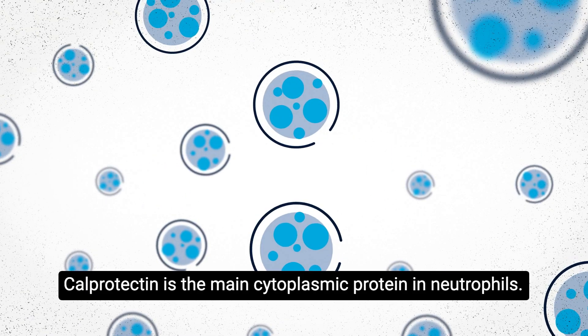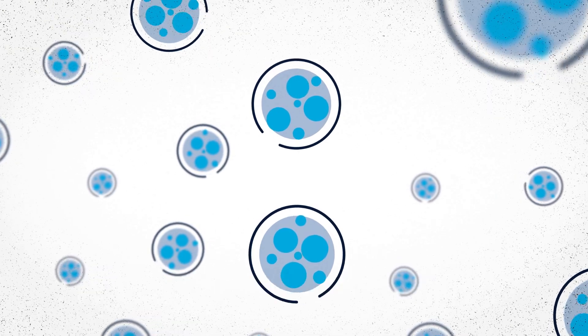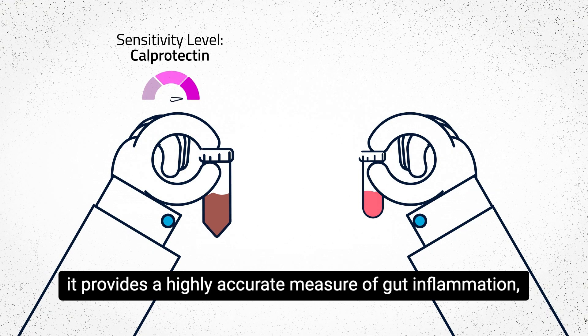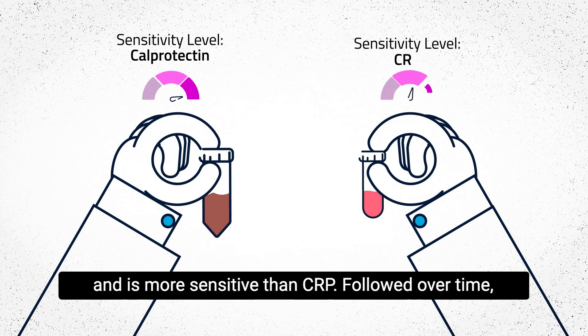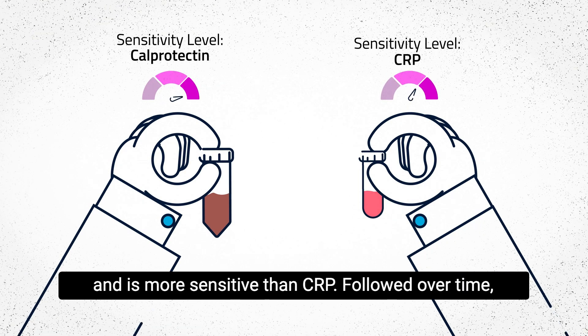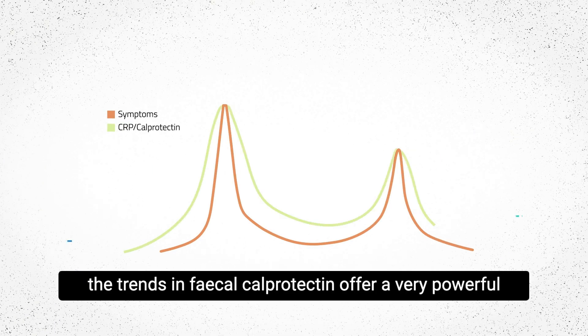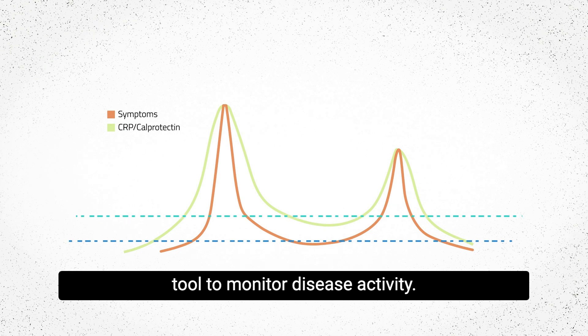Calprotectin is the main cytoplasmic protein in neutrophils. Measured in a stool sample, it provides a highly accurate measure of gut inflammation and is more sensitive than CRP. Followed over time, the trends in fecal calprotectin offer a very powerful tool to monitor disease activity.